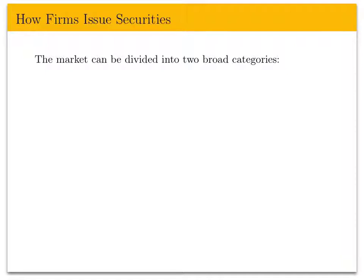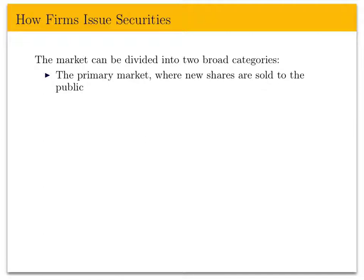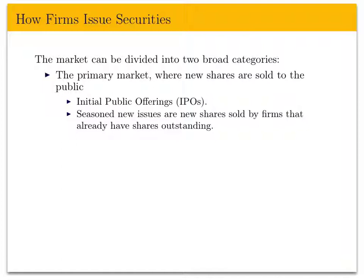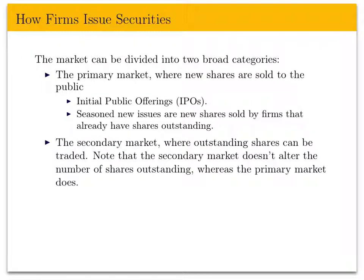Let's switch gears briefly and talk about how firms issue securities. The market can be divided into two broad categories. The primary market is where new shares are sold to the public — either through initial public offerings (IPOs), where a firm issues new shares and goes public, or through seasoned new issues, where firms with existing shares outstanding add more to the pool. The secondary market is where already-issued shares are traded among investors, and it does not alter the total number of shares outstanding.